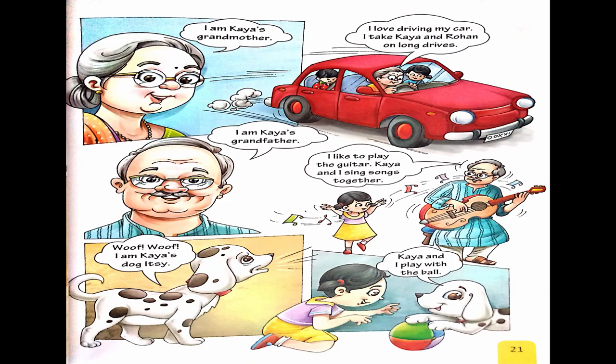Page number 21: 'I am Kaya's grandmother. I love driving my car. I take Kaya and Rohan on long drives.' Kaya's grandmother loves driving and takes them on long drives. Next: 'I am Kaya's grandfather. I like to play the guitar. Kaya and I sing songs together.' Kaya's grandfather plays guitar and they sing songs together.